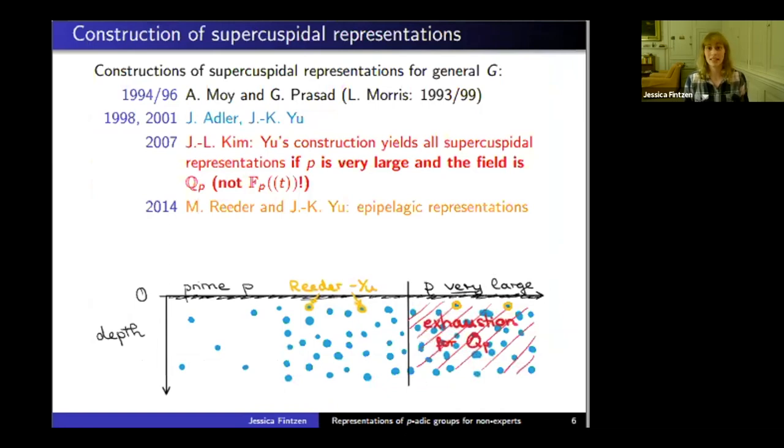They said take a certain input, and once we have the input, the output are these nice epipelagic representations. But they could only prove the input exists for large primes p.